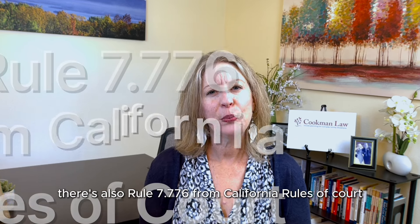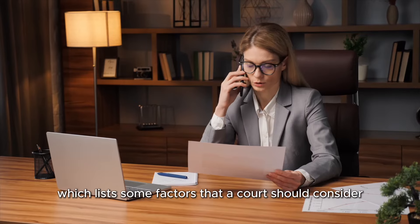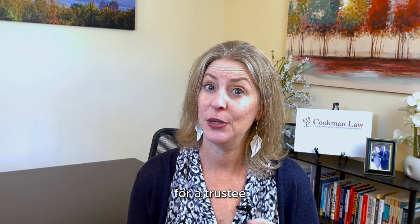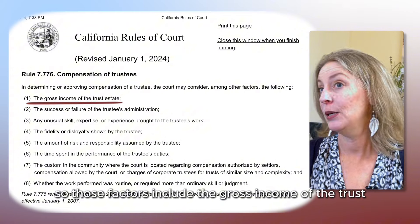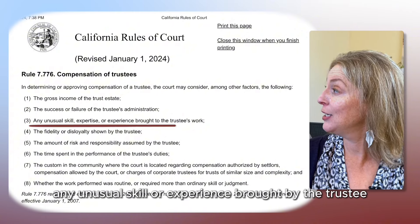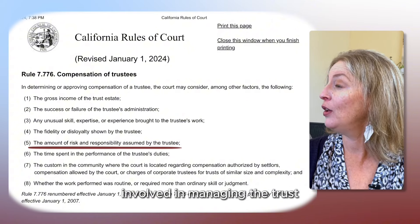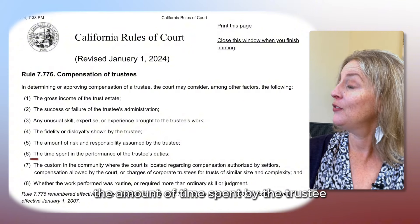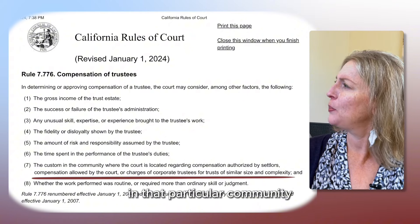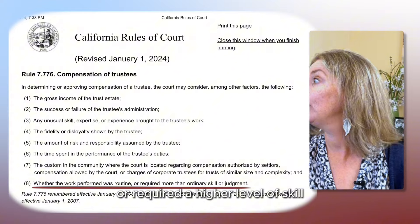There's also Rule 7.776 from California Rules of Court, which lists factors a court should consider in determining appropriate trustee compensation. Those factors include the gross income of the trust, whether the trust administration was successful, any unusual skill or experience brought by the trustee, the amount of risk and responsibility involved, the amount of time spent, and how much is customarily paid in that community for routine versus higher-skill work.